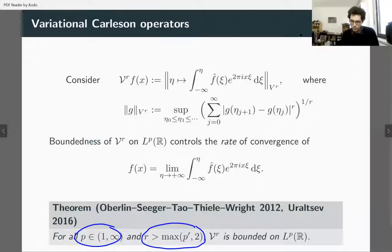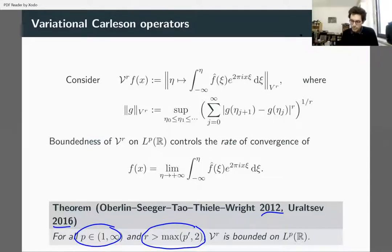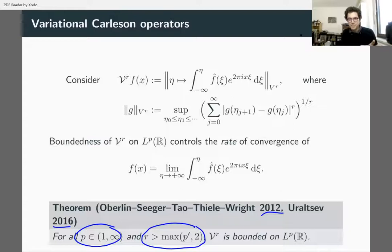This is more recent — 2012 and 2016 — and everything here is still scalar-valued. The method of proof uses the same key ideas as for the Carleson operator: time-frequency-scale decomposition, finding nice regions, and so on. The analysis on those nice regions becomes harder because you're dealing with variations, but the same key idea applies; the technicalities just become harder and more unfortunate.